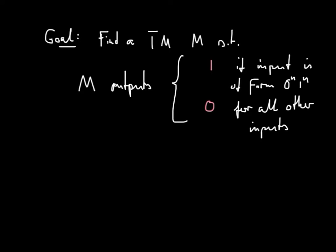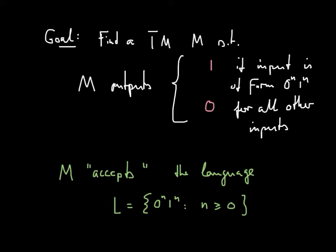We would like to construct a Turing machine that does the following. It gets a binary input, and it outputs 1 if the input is of the form 0^n 1^n, and it outputs 0 for all other inputs. So we could say that M accepts the language L = {0^n 1^n}. And remember, that was one of the languages that no finite automata could accept.